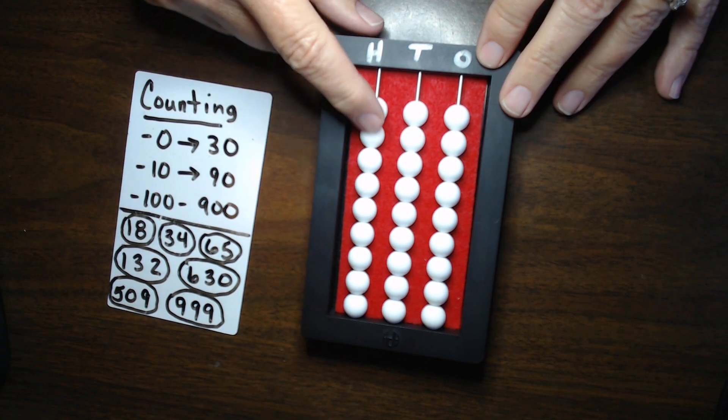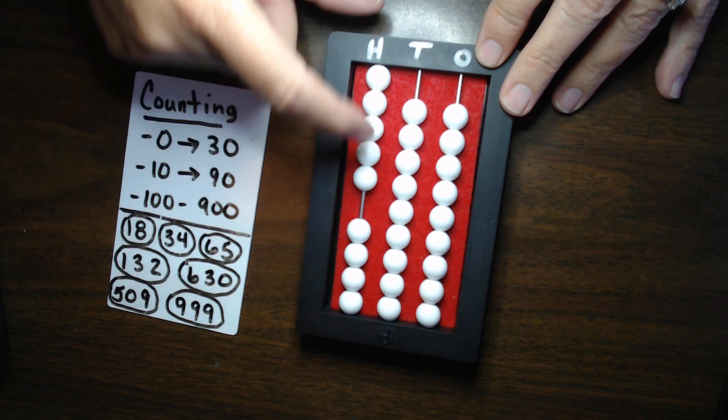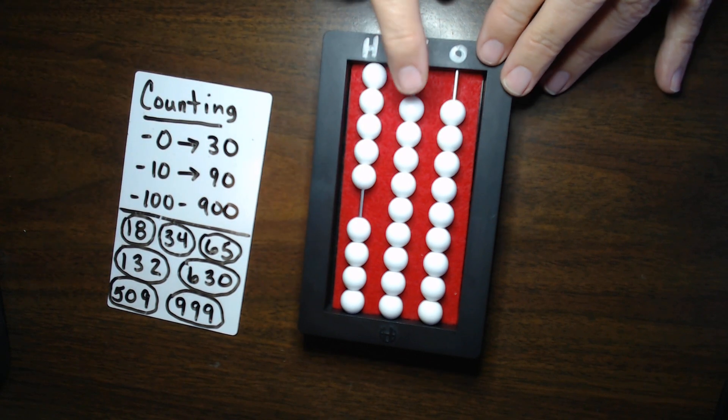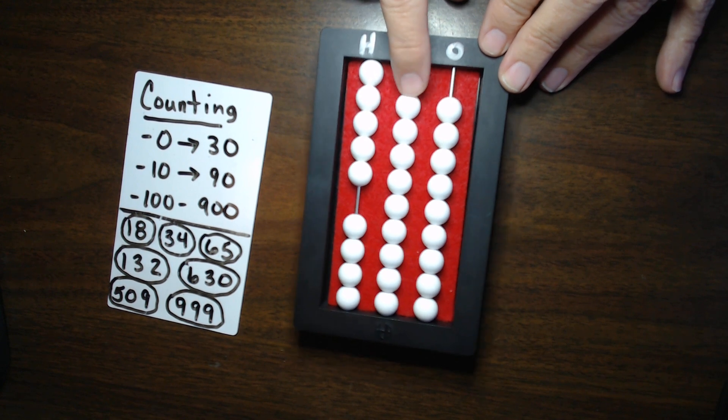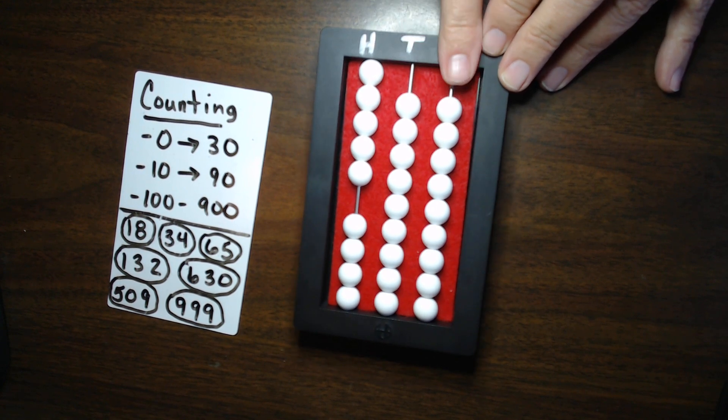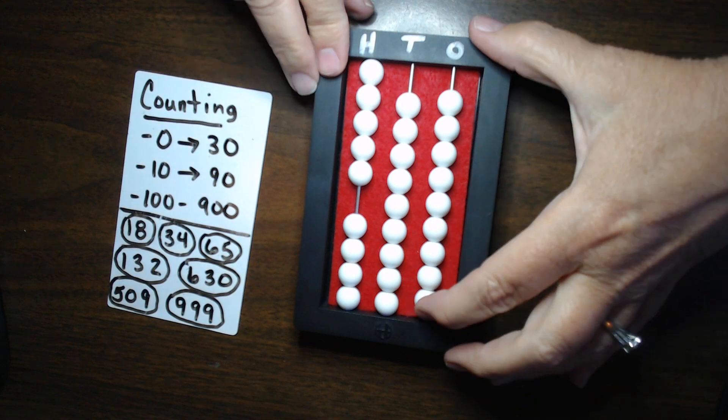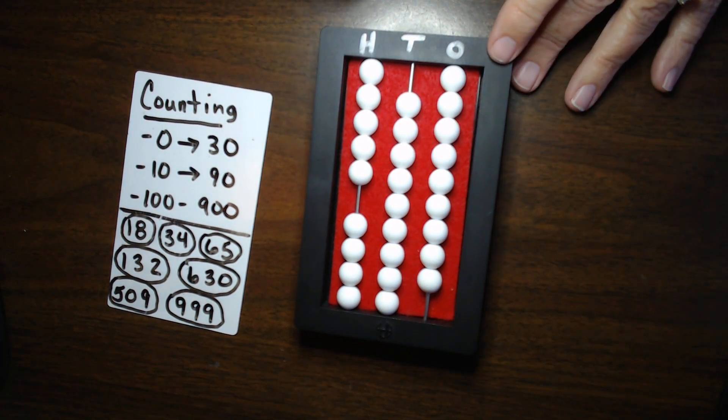509. Let's set that one. 500. 1, 2, 3, 4, 5. Now, we don't have 0 in the 10s column. So, make sure you skip that to leave that placeholder and go to the 1s to set 9. So, there you have the number 509.